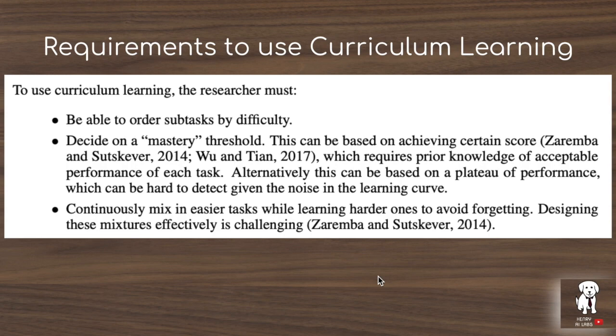The researchers present three requirements for using curriculum learning on different problems in supervised and reinforcement learning. First, you have to be able to order the subtasks by difficulty. In the sequence-to-sequence addition problem, you order by difficulty by saying that one-digit addition, like eight plus four, is a lot easier than nine-digit addition with much larger numbers.